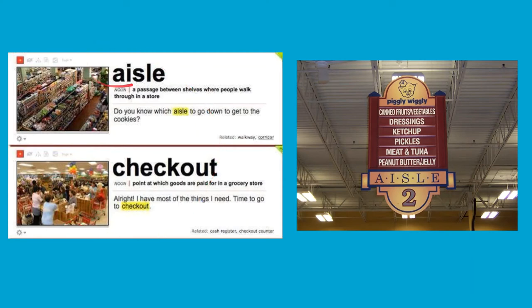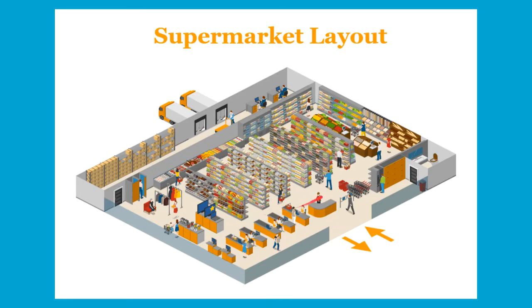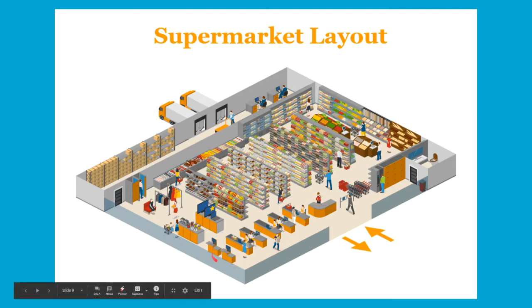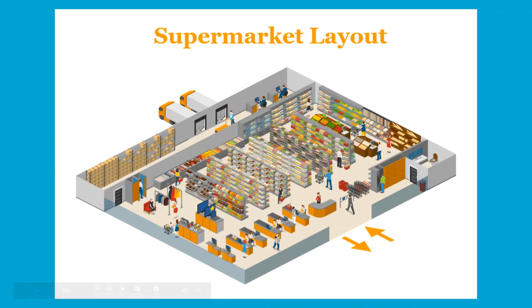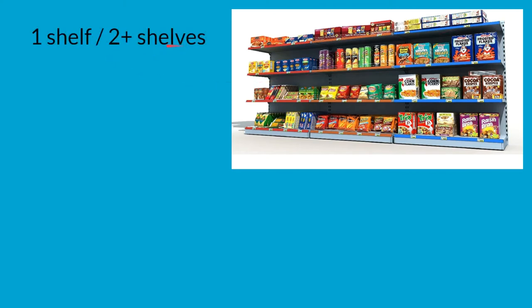So remember: aisle and checkout. These are aisles — maybe this would be aisle one, this would be aisle two, this would be aisle three. This is the checkout at a supermarket or grocery store. Now, what are these called? There are four here — these are called shelves. If you have one, it's a shelf; two or more are shelves. So one shelf has Lay's potato chips; three shelves have cereal.